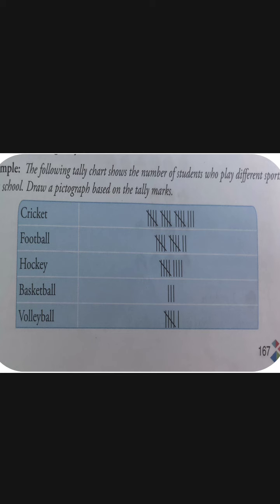The question says: the following tally chart — जिसके अंदर tally marks बने हुए हैं — shows the number of students who play different sports. ये जो पूरे tally marks हैं, ये हमें number of students बता रहे हैं — cricket में कितने बच्चे खेलते हैं, football कितने बच्चे खेलते हैं, इस तरीके से numbering करी हुई है. Draw a pictograph based on the tally marks.